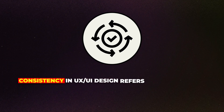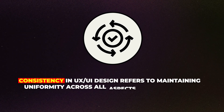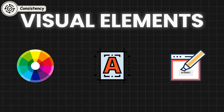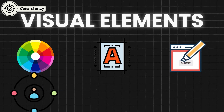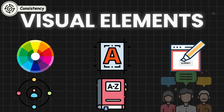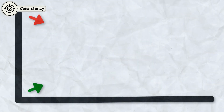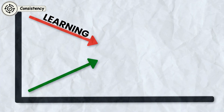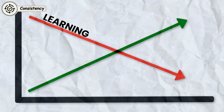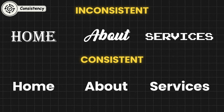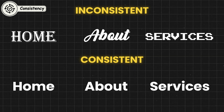Consistency in UX or UI design refers to maintaining uniformity across all aspects of the product. This involves consistency in visual elements such as color schemes, typography, and button styles, as well as consistency in interaction patterns, terminology, and feedback. The goal is to ensure that users feel comfortable and familiar with the interface, no matter where they are in the product. Consistency helps reduce the learning curve for users because once they've understood one part of the interface, they can apply that knowledge to the rest.